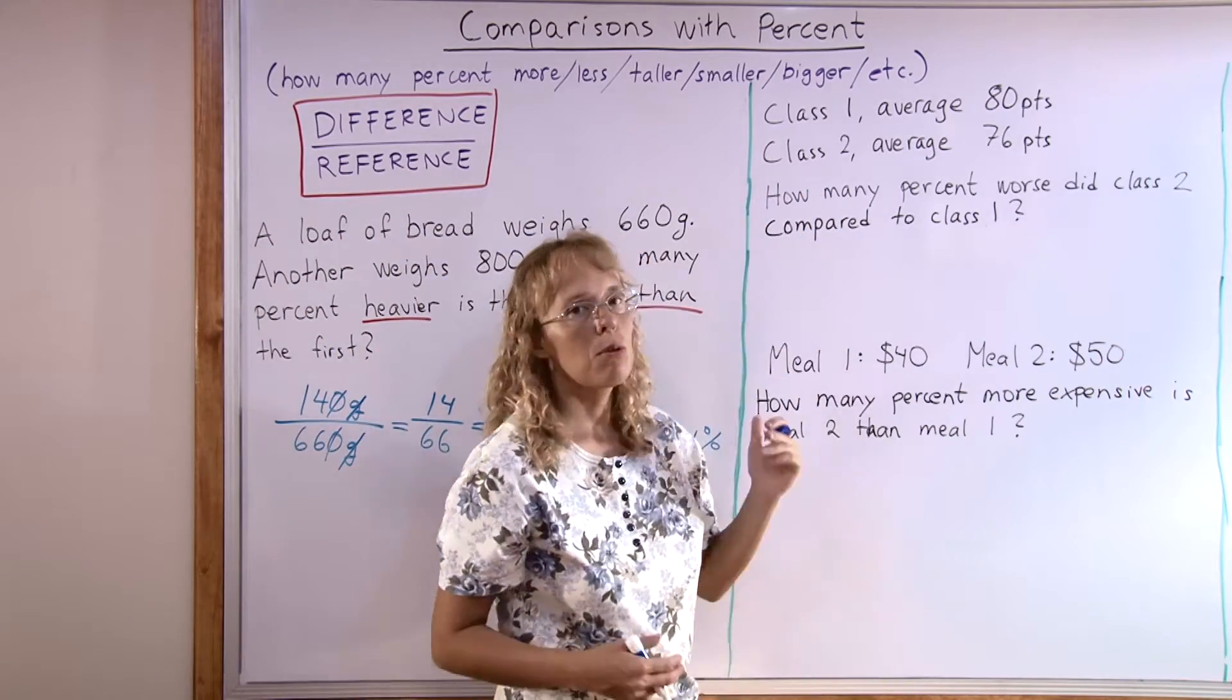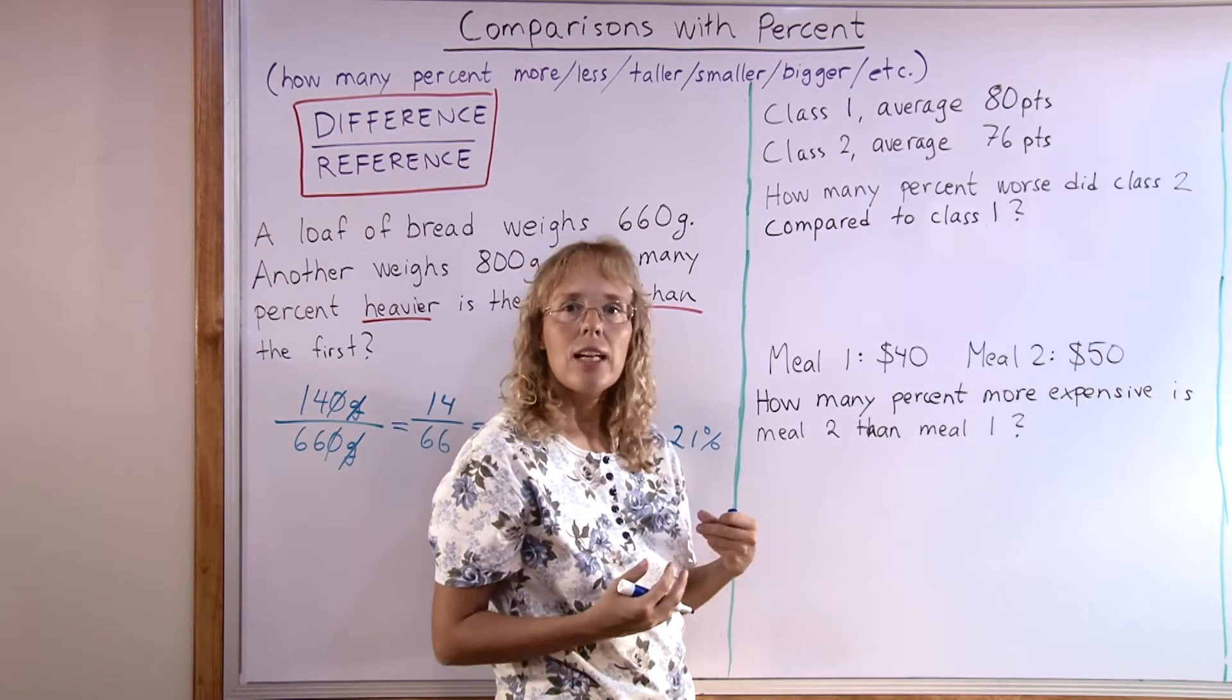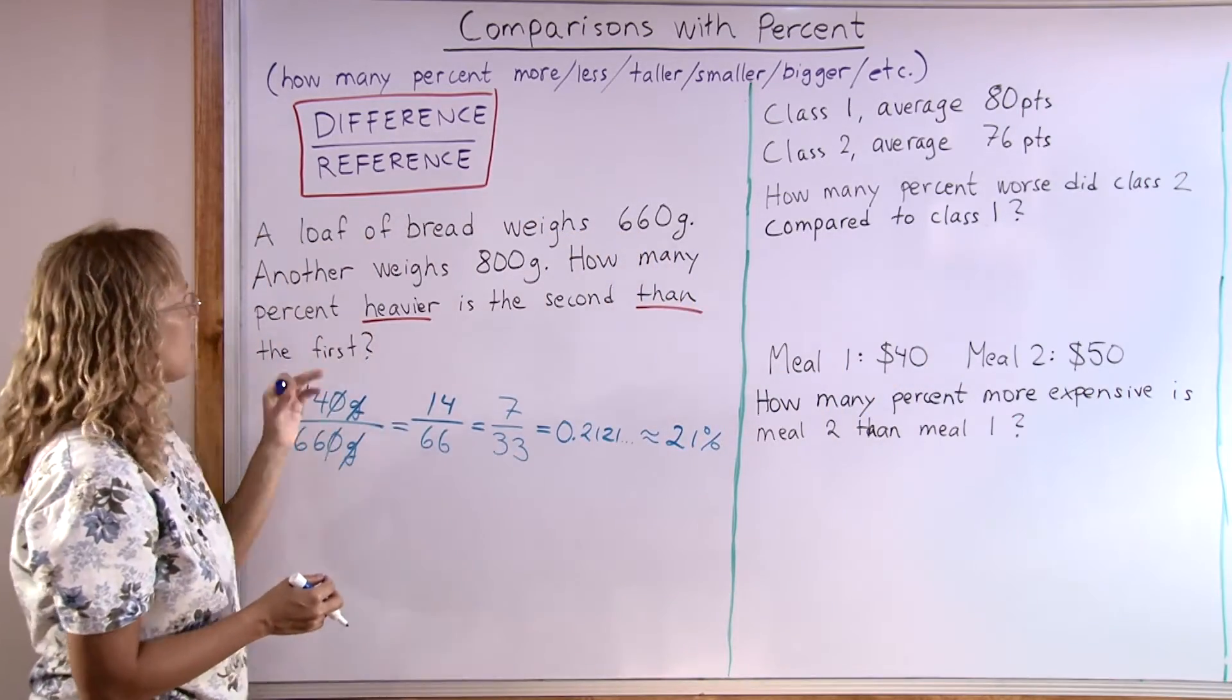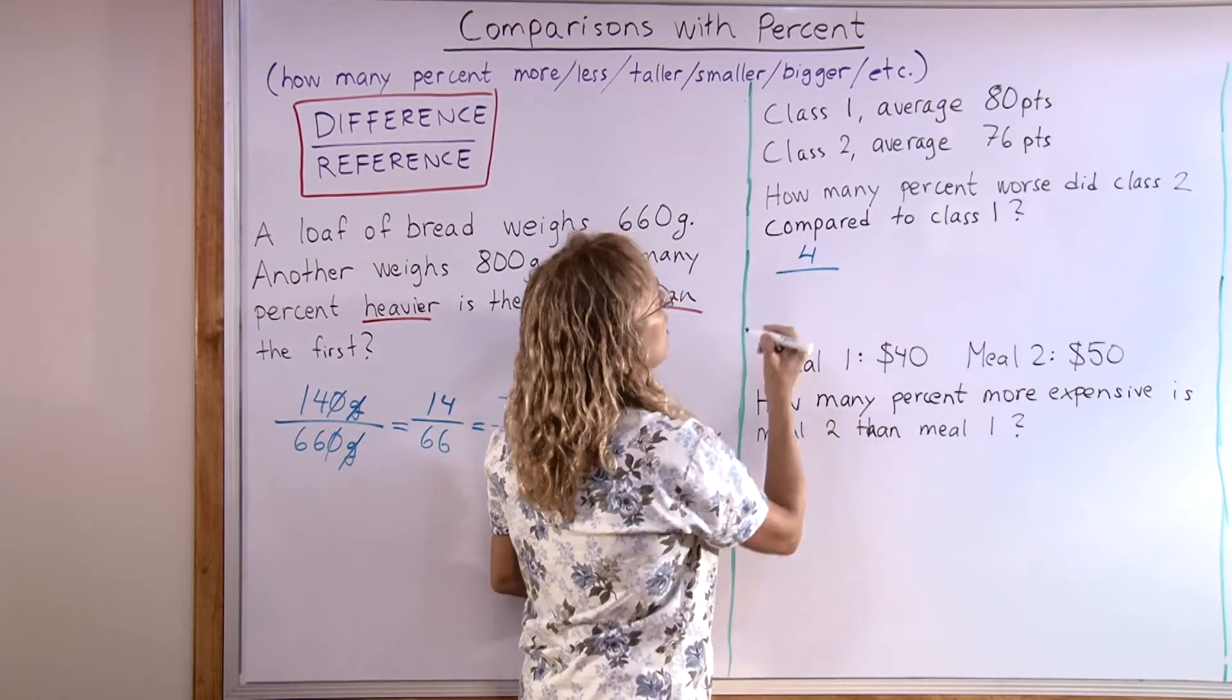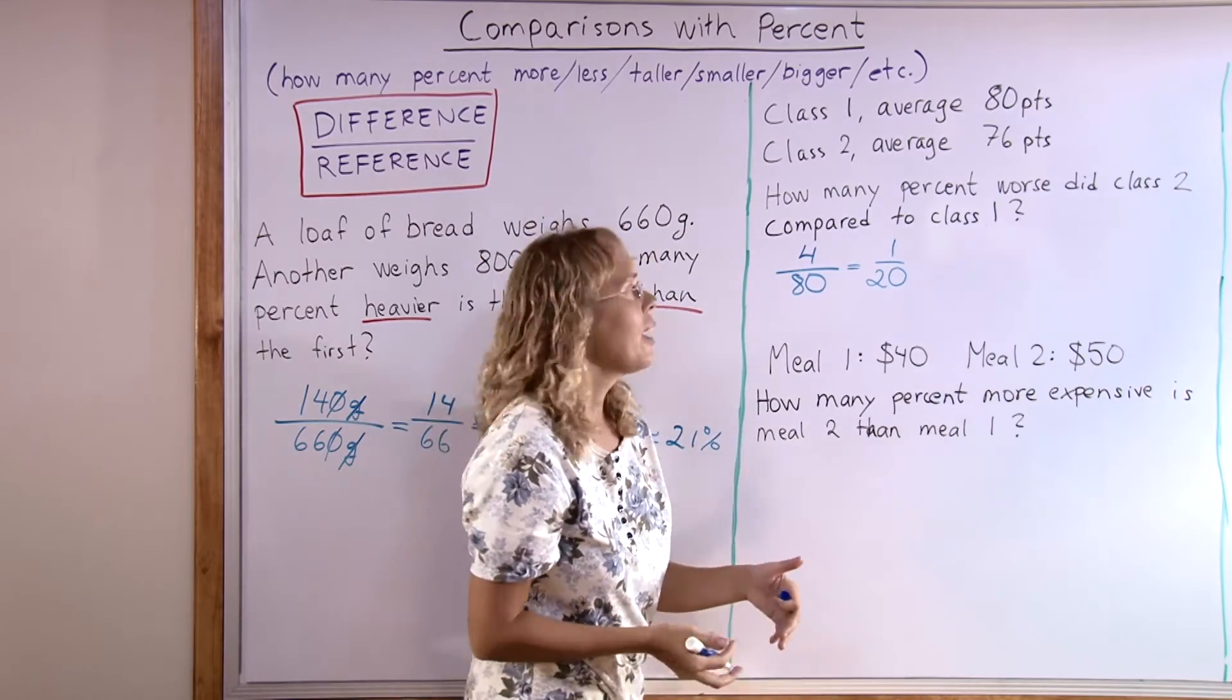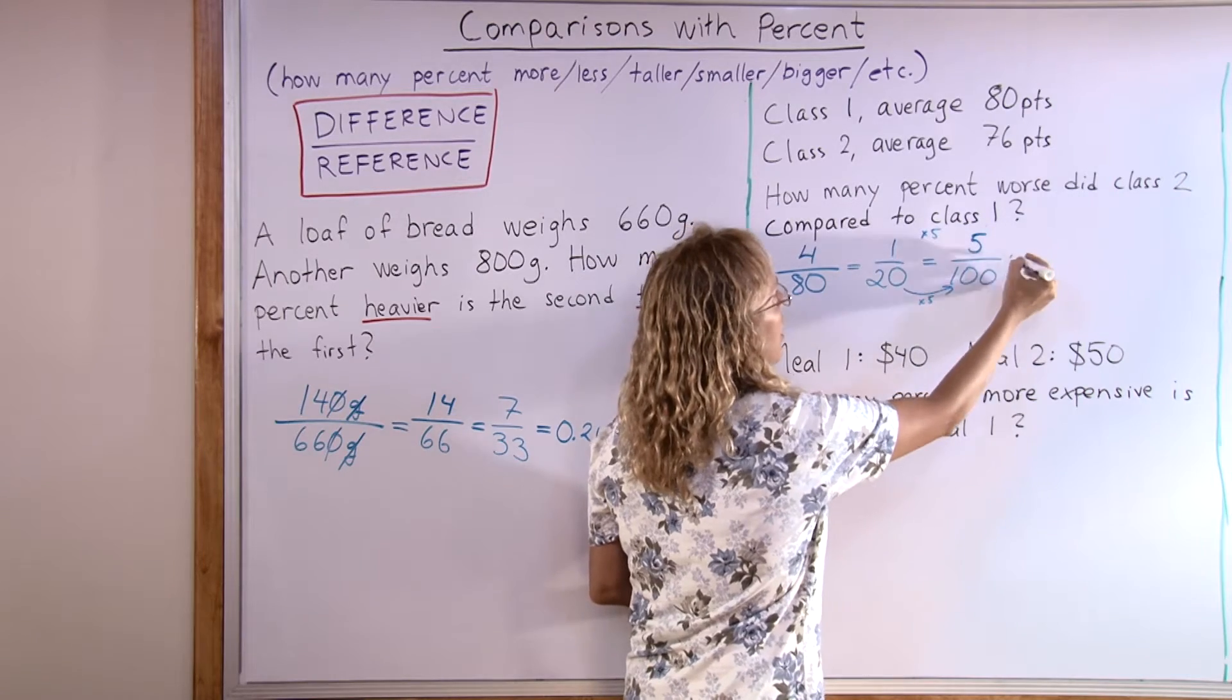Here we have two classes of students who took a quiz or test. In class one, the average was 80 points. In class two, the average was 76 points. Now we ask how many percent worse did class two do compared to class one? The reference class is class one. We will simply find the difference and then divide it by the reference. So the difference between the point counts is 4, and our reference is class one's average, 80. That's easy, right? This fraction simplifies to 1 over 20, one twentieth. And you can write it as an equivalent fraction with denominator 100 quite easily. You go times 5 to get 5 over 100, which is 5%.